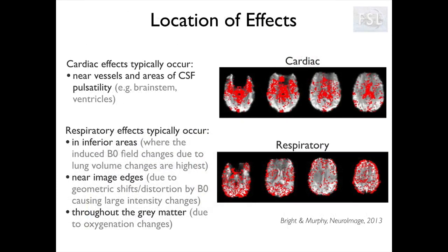Cardiac effects usually are concentrated at the base of the brain, near the main vessels and the areas of CSF pulsatility, while the respiratory effects are more widespread. They are mainly due to two main phenomena. The first is the fact that the lung volume changes during breathing, and the flow of air in and out changes the B0 field, with the biggest effects in inferior areas and near the edges of the brain. The second is the change of oxygenation of the blood during the respiratory cycle, which causes a change in the BOLD signal throughout the grey matter.